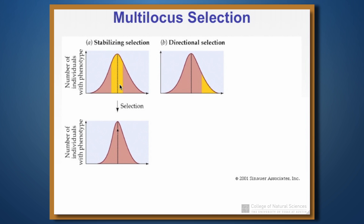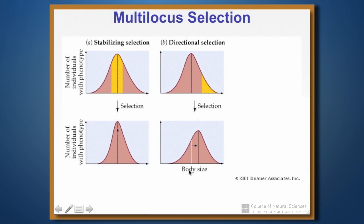Another type of selection is directional selection. In this case, selection favors one of the extremes of the distribution — here, the larger individuals. What happens in the next generation is that the mean value actually moves. The white line was the original mean value for the population, and after selection the black line is the new mean value. So the population has completely shifted — we've increased the average body size in the population.